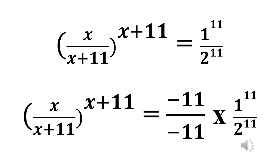Now we are going to factor out 11 in common so that both sides have the same form of base and power. What we do here is multiply the right side — that is, 1 raised to power 11 over 2 raised to power 11 — by minus 11 over minus 11. Since minus 11 over minus 11 is still 1, this still gives us 1 raised to power 11 over 2 raised to power 11.